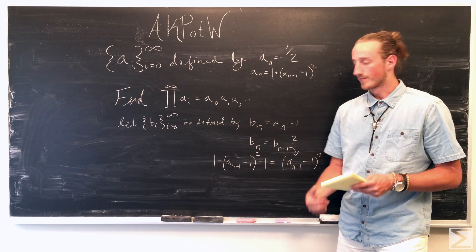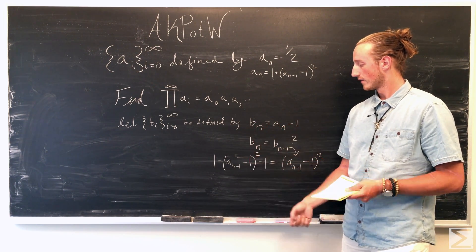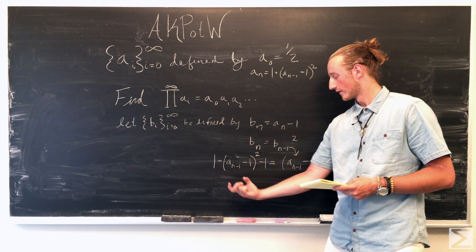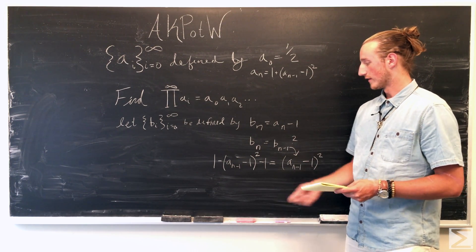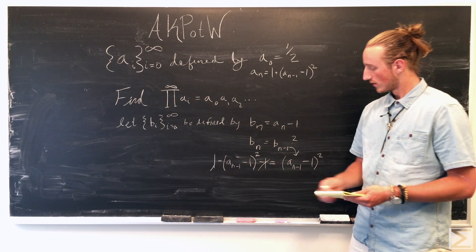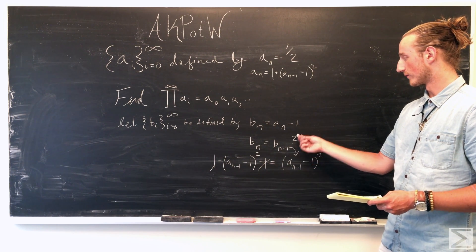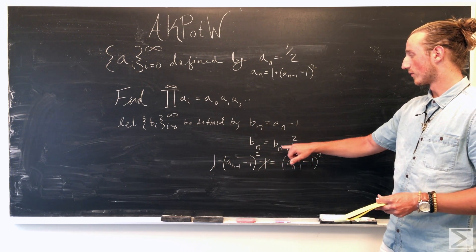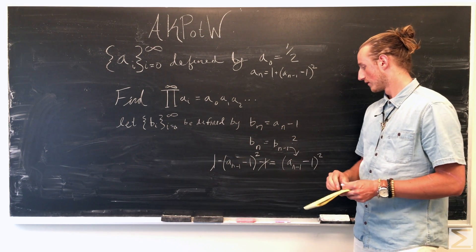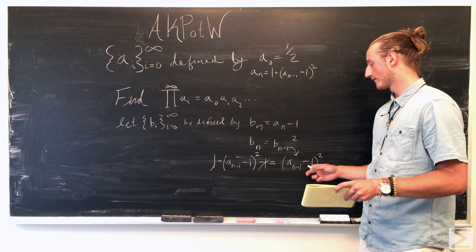So plugging in a of n minus one into b of n, we can see that a of n minus one is just going to be this here subtracted by one, and that's just going to leave us with a of n minus one minus one squared, going to be equal to b of n minus one squared, plugging b of n minus one into our new definition of b of n. It's just going to be b minus one is going to be a of n minus one minus one squared.